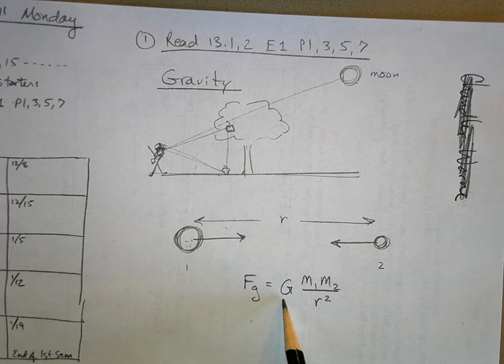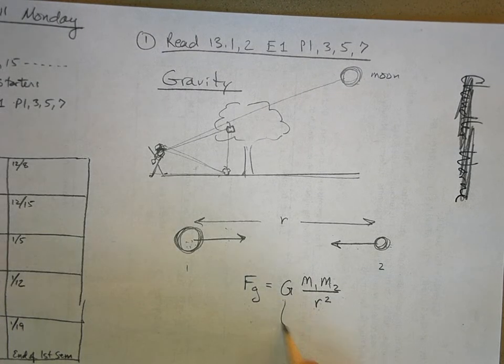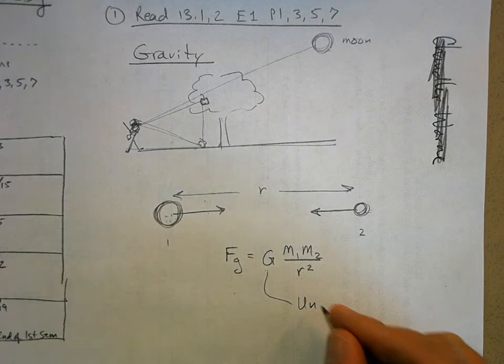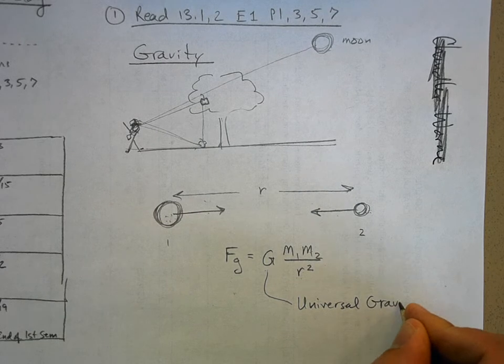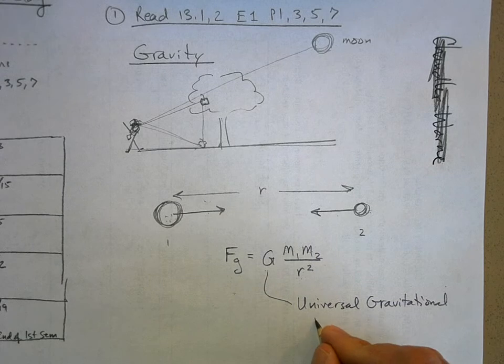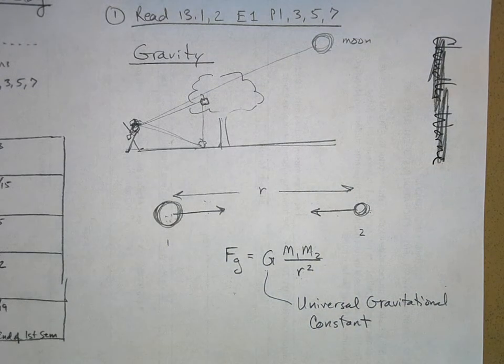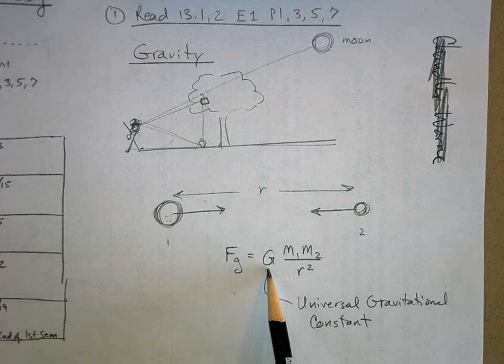Now this number right here, this constant of nature, it's called the universal gravitational constant. I just like to call it big G. Isaac Newton knew there was a number there but he didn't know what it was.